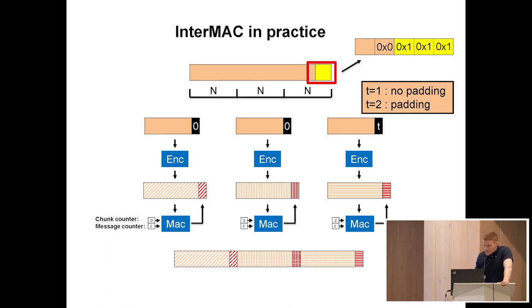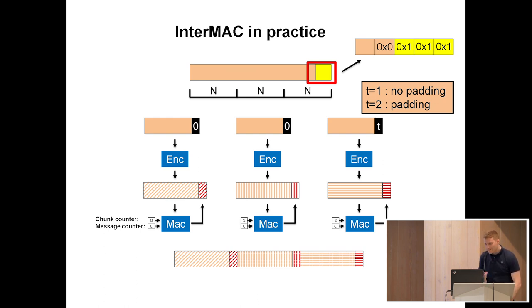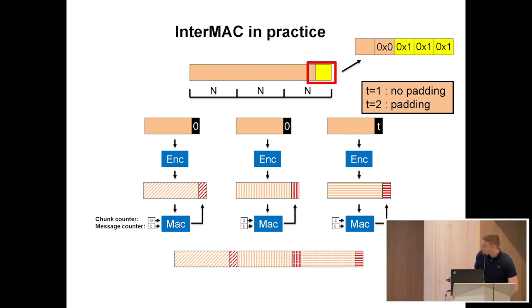The padding scheme we use is pretty simple. If the last byte of the message is zero, you pad it once; if it's not zero, you pad with zeros. We also made other changes to the InterMAC scheme — we didn't want to add padding if the message was already a multiple of n, so we encode this information in the last encoding byte of the last chunk. We also replaced the encrypt-and-MAC construction with more modern, nonce-based authenticated encryption schemes.